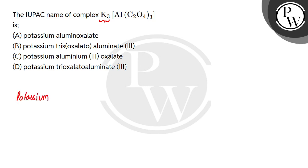And then the complex anion name will come, and then the ligand name will come. So this ligand is C2O4 2-negative. This is our oxalate ligand.